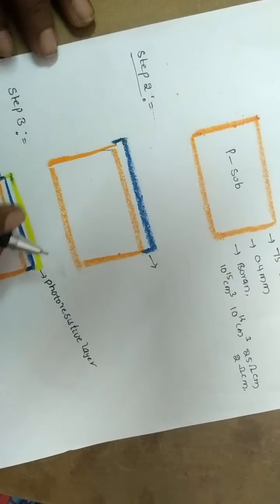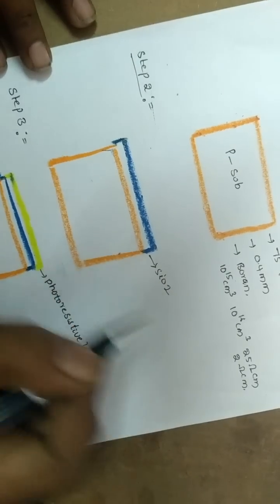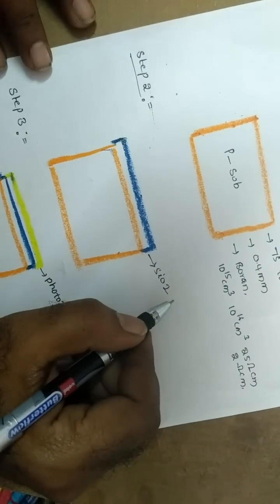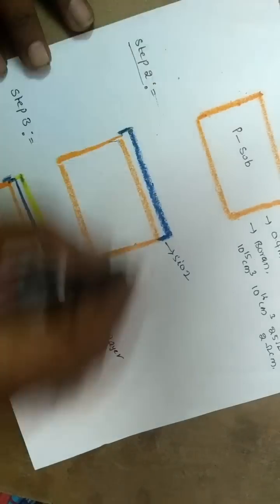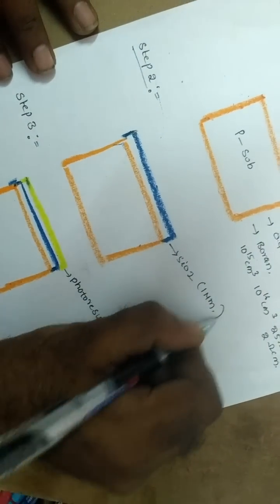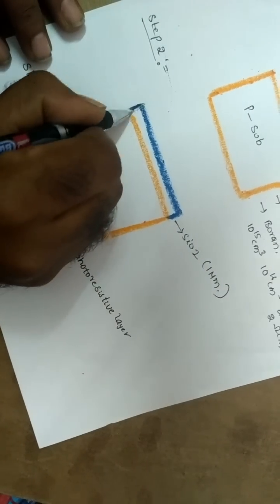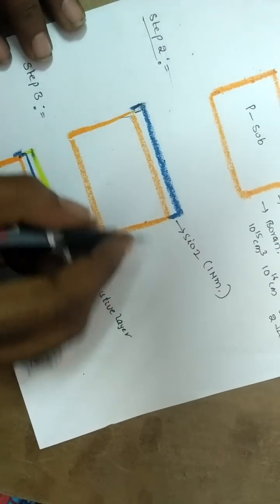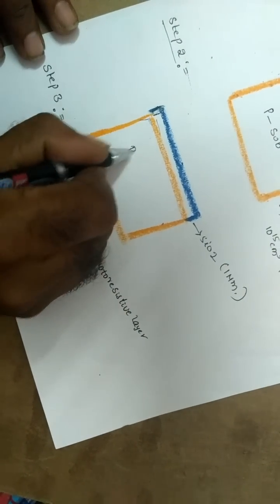Step 2: A relatively thick silicon dioxide layer is grown over the entire surface of the wafer. The silicon dioxide layer, typically 1 µm thick, acts as an excellent insulator onto which other layers may be deposited and patterned. It also protects the surface and acts as a barrier to impurities during fabrication.